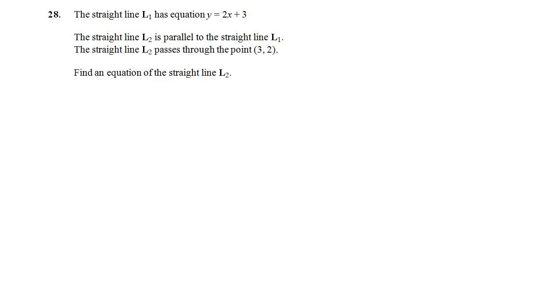Number 28. We've got a straight line, L1, and we know its equation. We're told that L2 is parallel to L1. And L2 passes through the point (3, 2). And we want the equation. So just like before, if you want an equation, you need two things. You need a point and a gradient. It always comes back to this. So looking at what we've got. Well, we're told that L2 is the line we want. And we're told that it passes through (3, 2). So straight away we've got the point. So a bit like before, we just need to work out the gradient.